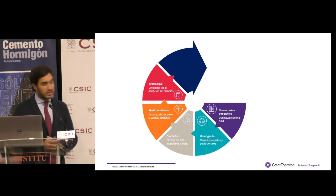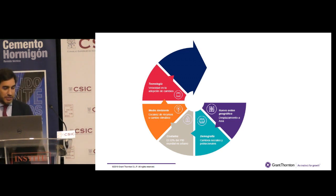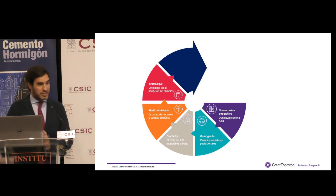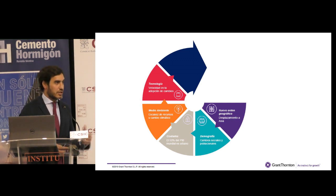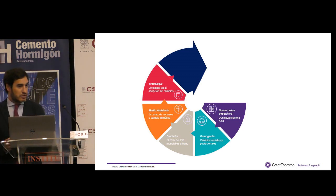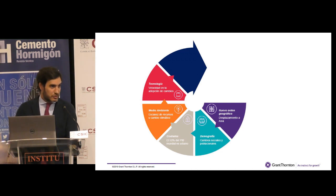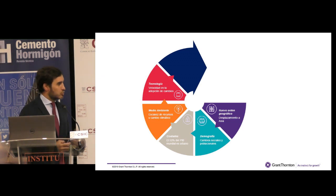De aquí a 2030 se espera que haya un incremento del 35% de demanda de alimentos debido al cambio climático y a la escasez de recursos. En cuanto a tecnología, en Estados Unidos tardaron 76 años en que el 50% de la población tuviese un teléfono, y han tardado solo 10 años en que el 50% tenga un smartphone. Por lo tanto, el avance tecnológico y la transformación digital es brutal y muy veloz.